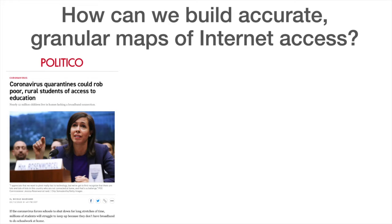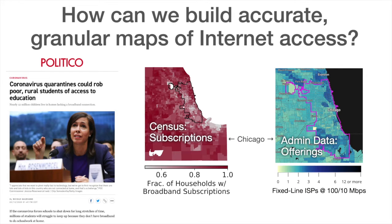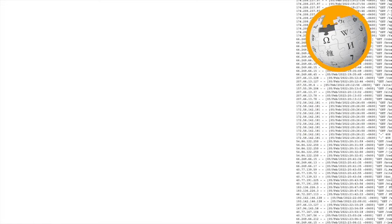Of course, we're not the first to think about maps, and we could lean on survey data or administrative records for figures on subscriptions or ISP offerings. But what about realized access to the internet — actual site visits? Our first idea was: what about server logs for a no-frills, high-volume site like Wikipedia? Could that tell us who's online?